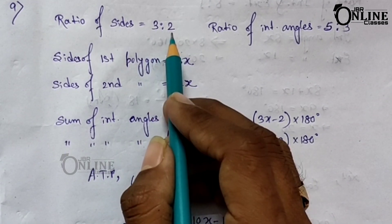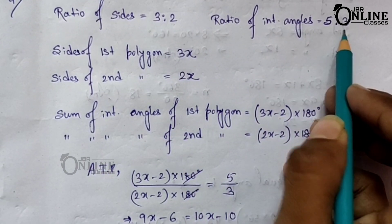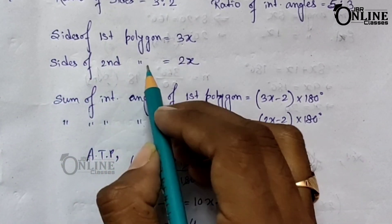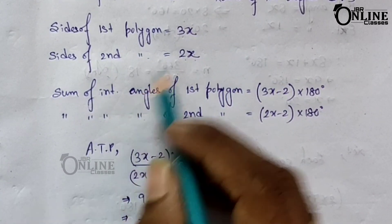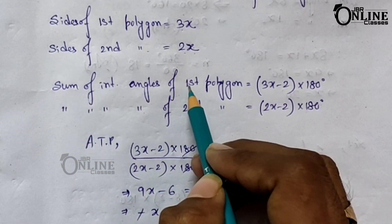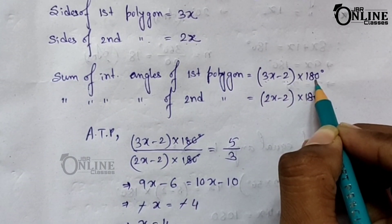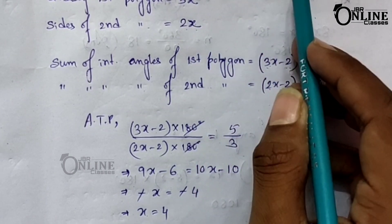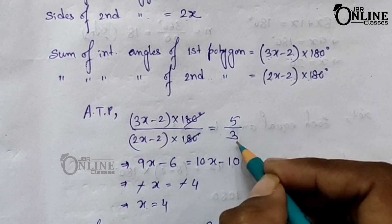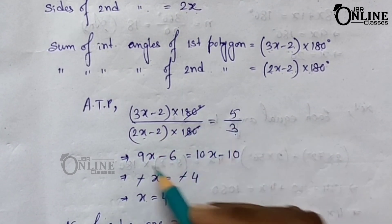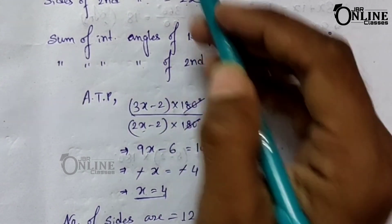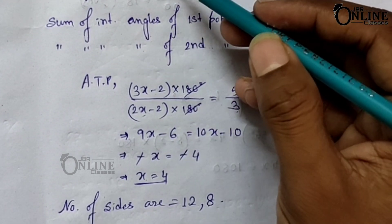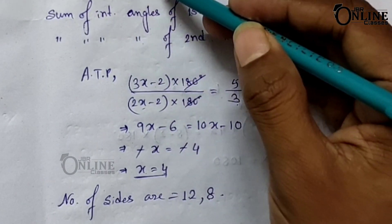Problem number nine: the number of sides of two regular polygons are in the ratio 3:2 and their interior angles are in the ratio 5:3. Let the number of sides be 3x and 2x. The sum of interior angles of the first polygon is (3x − 2) × 180° and of the second is (2x − 2) × 180°. Since the ratio of interior angles is 5:3, dividing and cross-multiplying gives x = 4. Therefore, the number of sides of the first polygon is 12 and the second is 8.